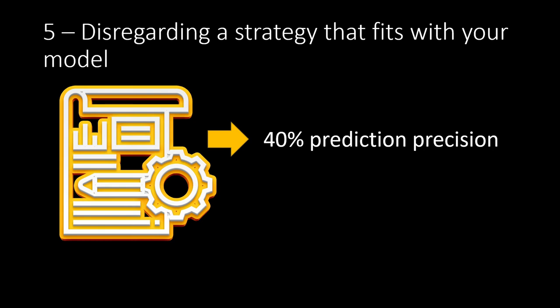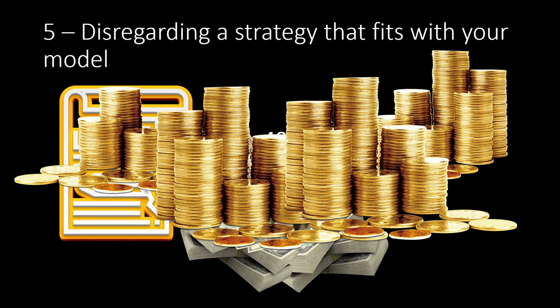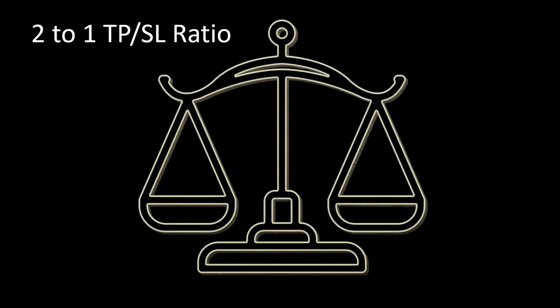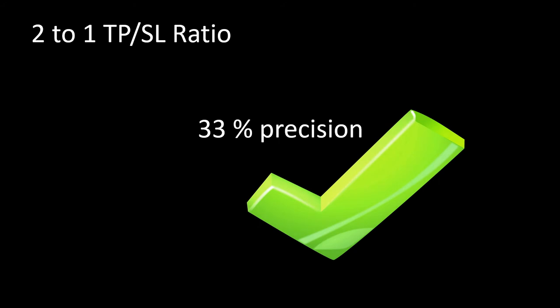Mistake number five: not considering a strategy that fits the model's precision. Consider a model with 40% prediction precision — it might look like a losing model since 40% is below 50%, but this accuracy can make you a millionaire if combined with the correct strategy. For example, using a two-to-one take-profit to stop-loss ratio makes each winning trade worth as much as two losing trades. In this case, any model precision above 33% can be a winner. Don't judge the model before combining it with an optimized strategy and backtesting it.